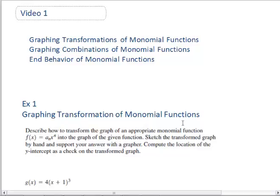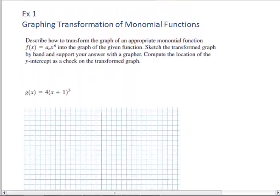In the first example, we want to describe how to transform the graph of an appropriate monomial function f(x) into the graph of the given function. We'll sketch the transformed graph by hand and support it using a grapher. The grapher I'm going to use will be Desmos. We'll compute the location of the y-intercept as a check on the transformed graph. The first function we see is g(x) = 4(x + 1)³.